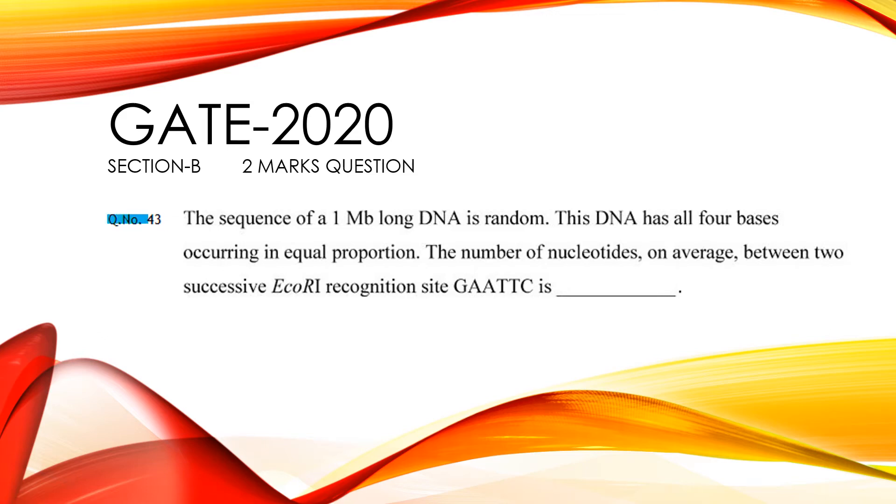Question 43. The sequence of a 1 Mbp long DNA is random. This DNA has all four bases occurring in equal proportion. The number of nucleotides on average between two successive EcoRI recognition sites GAATTC is?